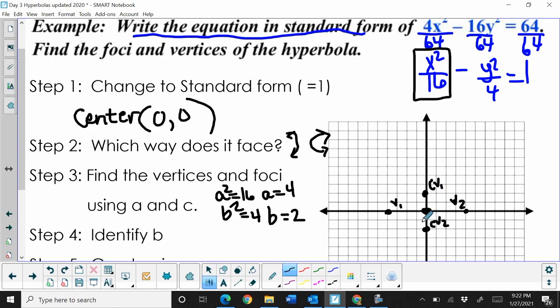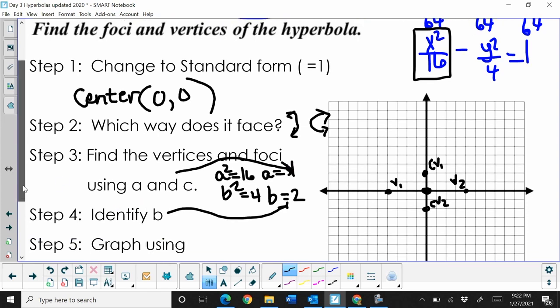I've got a and b figured out. Now I need to find c using the Pythagorean theorem. I'm going to take a² plus b² and set it equal to c². So 16 plus 4 equals 20, and that's c².